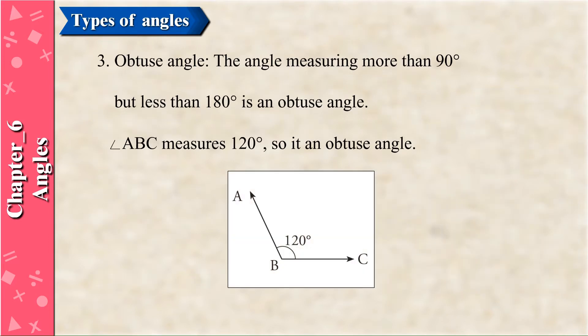Obtuse Angle: The angle measuring more than 90 degrees but less than 180 degrees is an obtuse angle. Angle ABC measures 120 degrees, so it is an obtuse angle.